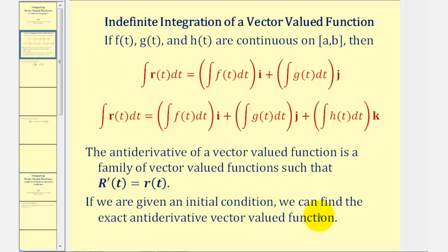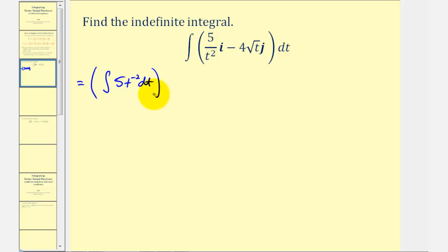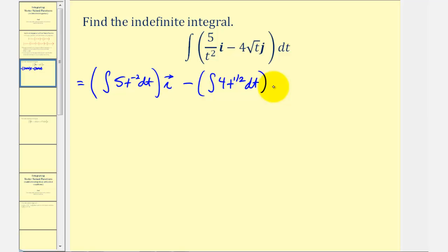Let's take a look at our first example. In order to find this indefinite integral, we want to integrate each component. That means we'll have the indefinite integral of five divided by t squared, written as 5t to the power of negative two dt, times i, and then minus the integral of four square root t, written as 4t to the power of one-half dt, times j.